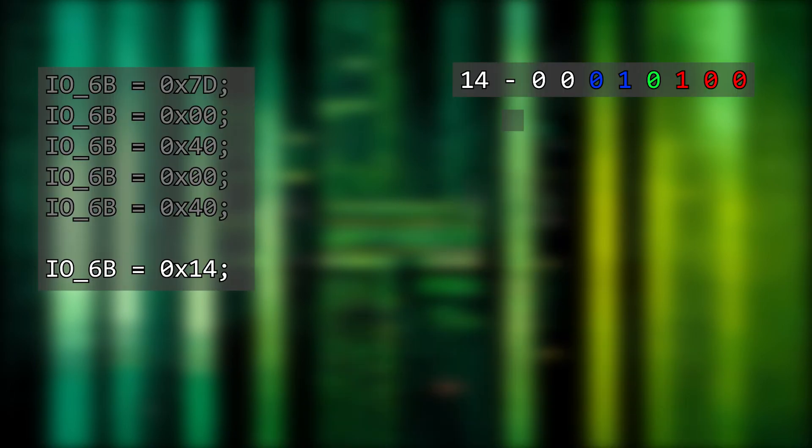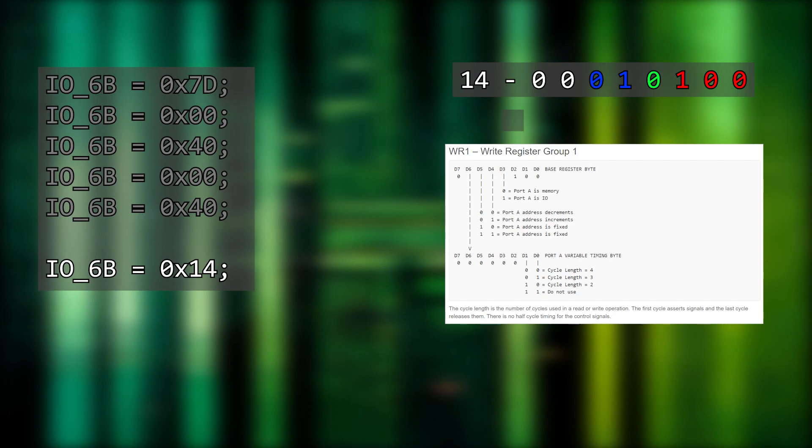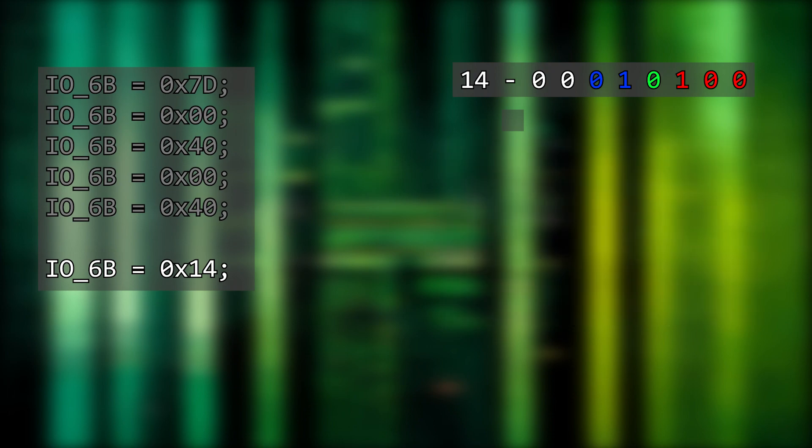We now need to write to WR1. We write hex 14, which is bit pattern 0001 0100. The first three bits have to be 100 — this is how the hardware knows we want WR1 and not WR0, because on WR0 you can't write bit pattern 100. We then set a 0 to say port A is memory and a 1 to say we're incrementing port A's address, and then zeros for everything else. We've now got port A configured with its starting address, transfer size, and that we're incrementing the copy.